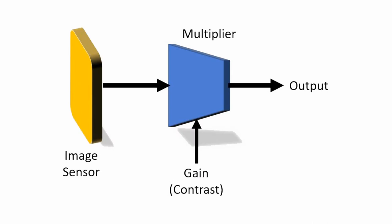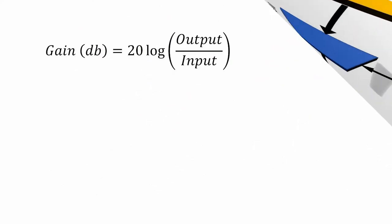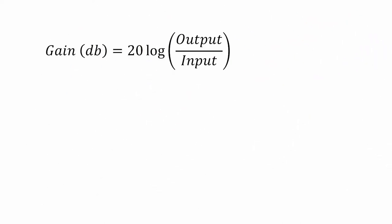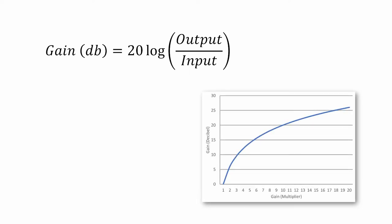Gain, also called contrast, is applied to the camera's image data. Usually the gain starts at 1 and increases to some maximum value. In some cameras, gain is controlled in decibels, or 20 times the logarithm of the output divided by the input. For these systems, a value of 0 equals 1, as the logarithm of 1 is 0.